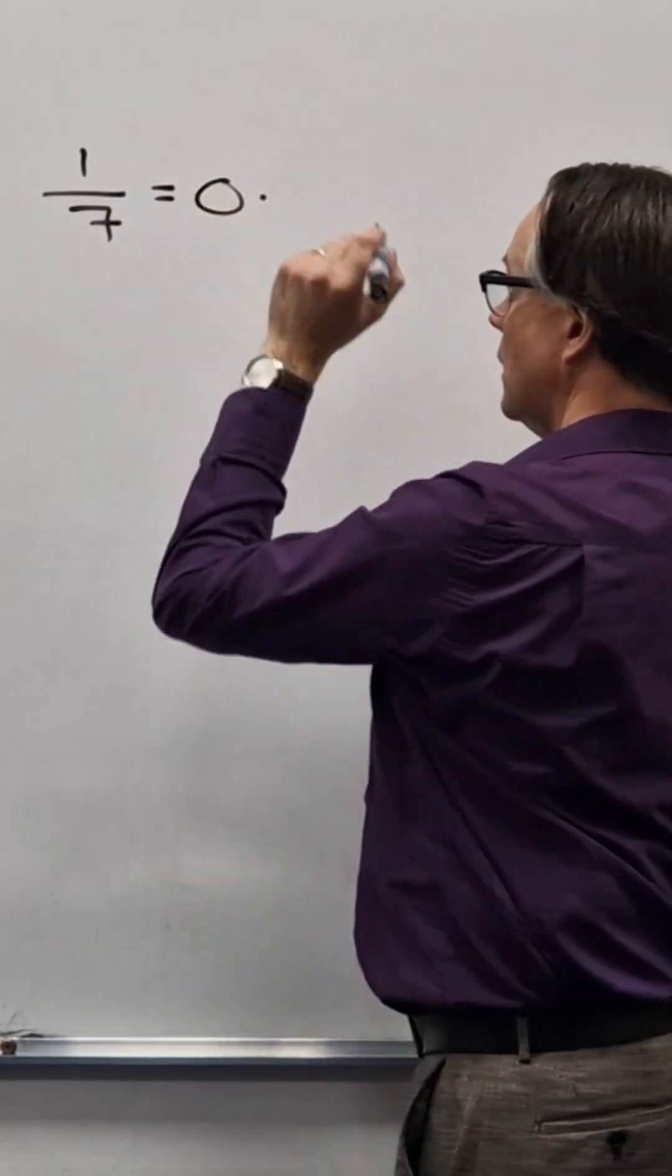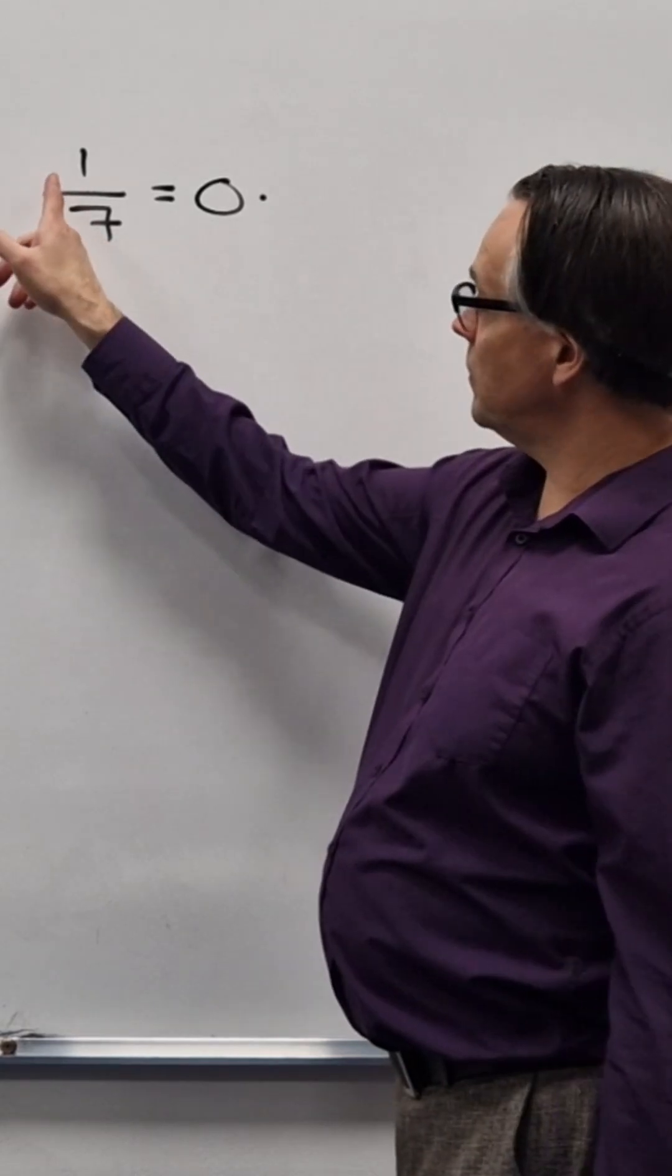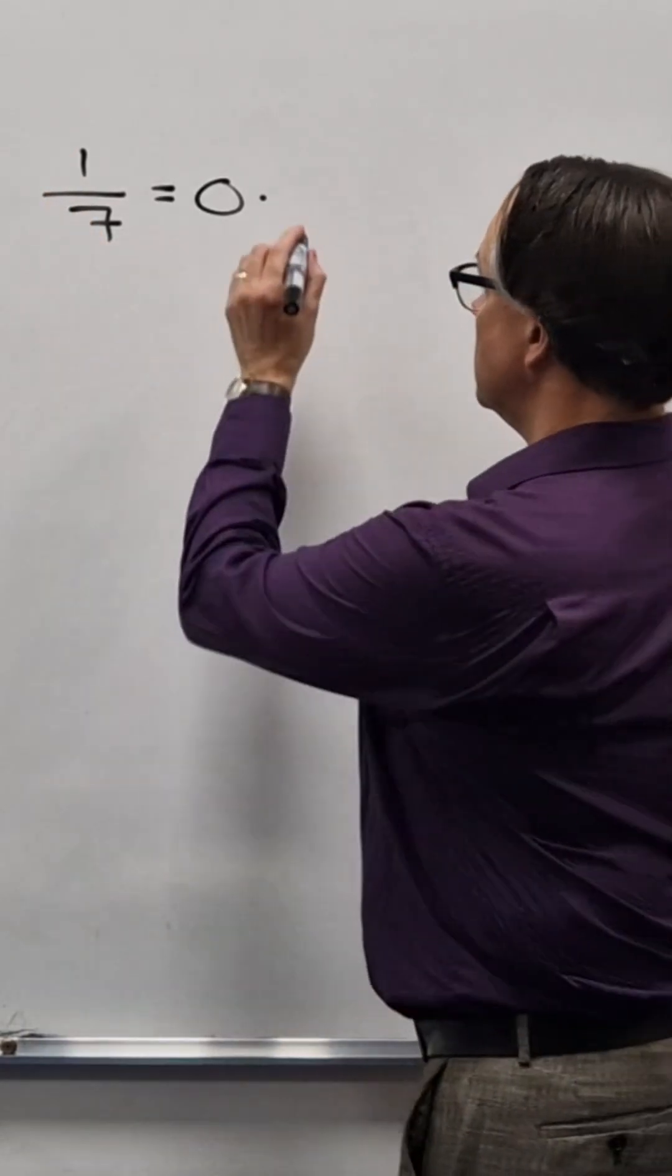So obviously starts with zero point because it's less than one. Just remember that because it's seven, double the seven, get 14.